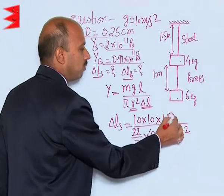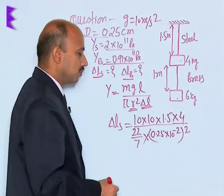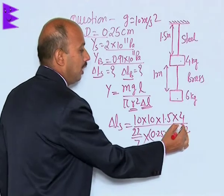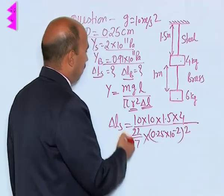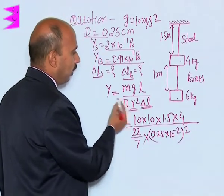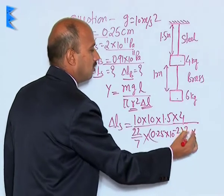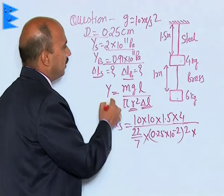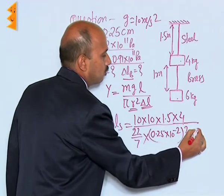This is d² upon 4, so 4 comes up. Y will be in the denominator - that is Young's modulus of steel, 2×10^11.